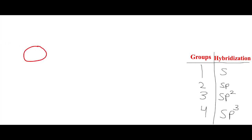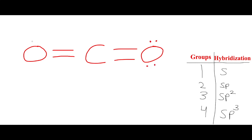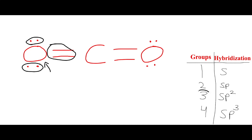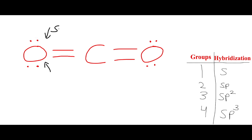Let's go to the next problem. We were told to find the hybridization for this oxygen right here. So we count how many bonds it has — lone pairs count as one bond as well. So that's one, two, three. It has three bonds, three groups, meaning it's SP2 hybridization orbital. So this oxygen is SP2.